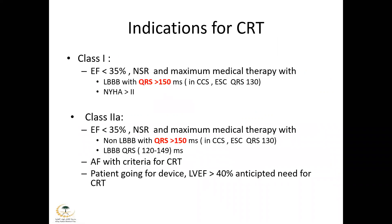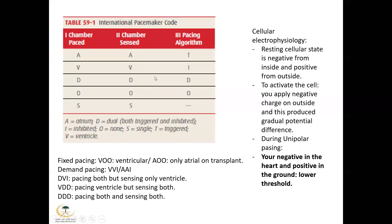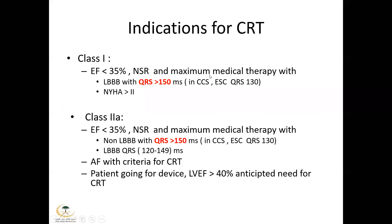The American guidelines specify QRS of 150 ms. For class 1 indication: ejection fraction less than 35%, sinus rhythm, maximum medical therapy, left bundle branch block, and QRS more than 150 ms, with NYHA class 2 or more. Class 2A: non-left bundle branch block but QRS more than 150 ms, or left bundle branch block with QRS between 120–149 ms. If the patient has AF instead of sinus rhythm, the indication goes from class 1 to class 2A. If a patient with heart block and ejection fraction of 40% needs a device and CRT is anticipated in the future, consideration should be given.